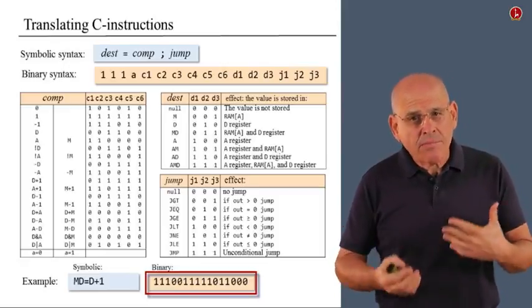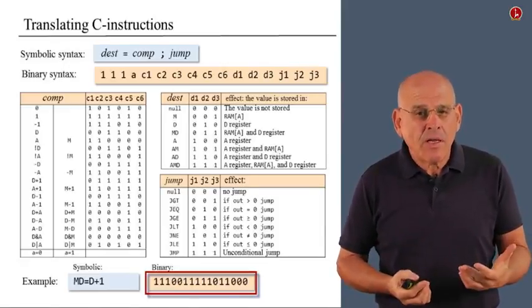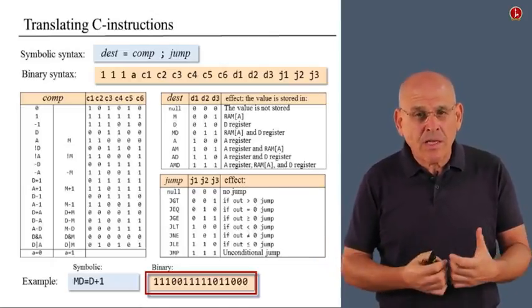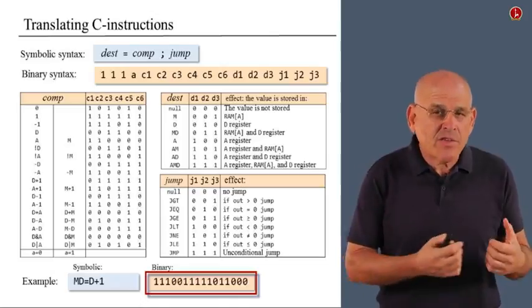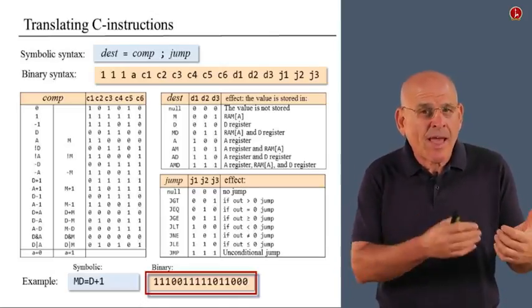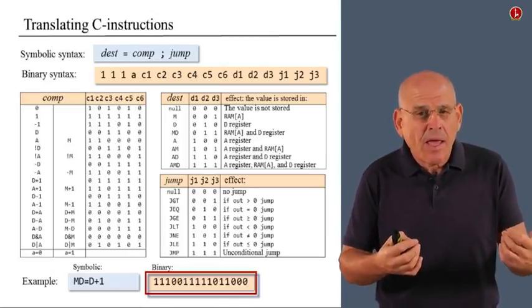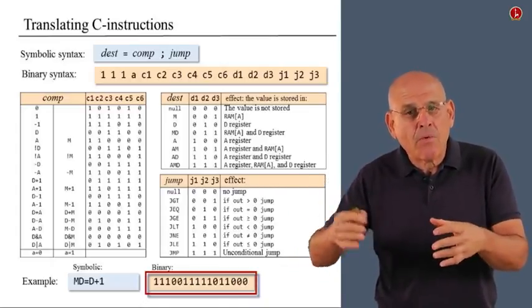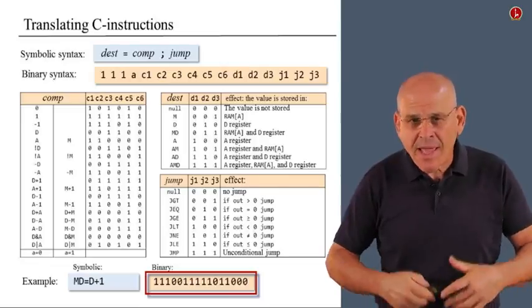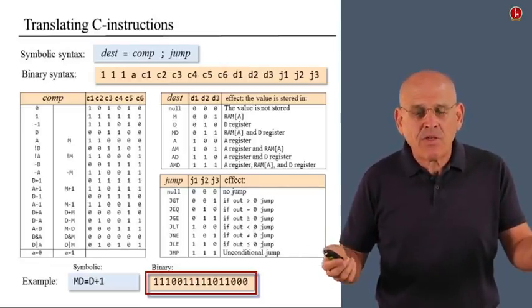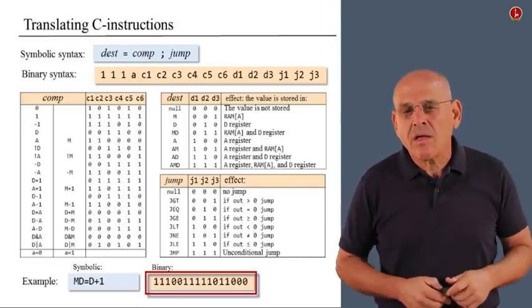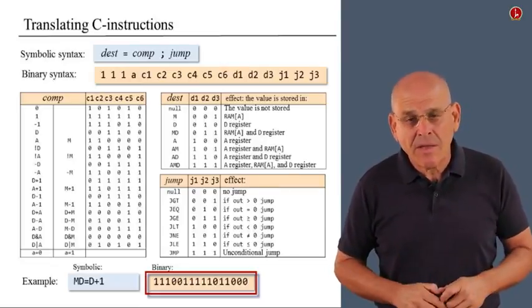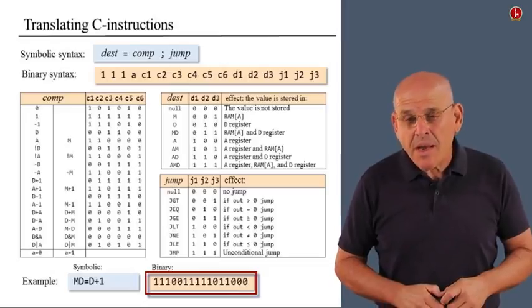As you see, everything that I do here is text processing. And in some languages it is called string processing. I have a source string, which I analyze in some way. And I have a target string, which I build in some gradual process. And every high level language has the capability to do such a string processing. And that's exactly what you'll do when you actually write the assembler.